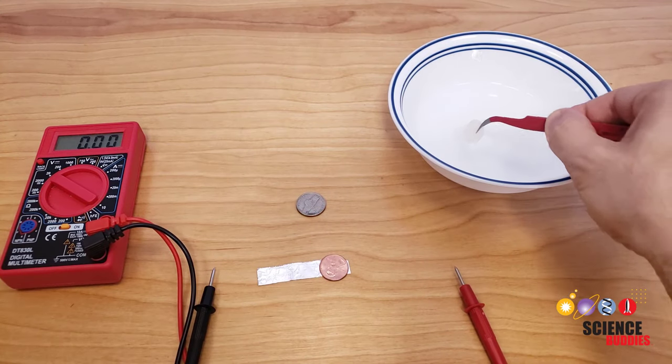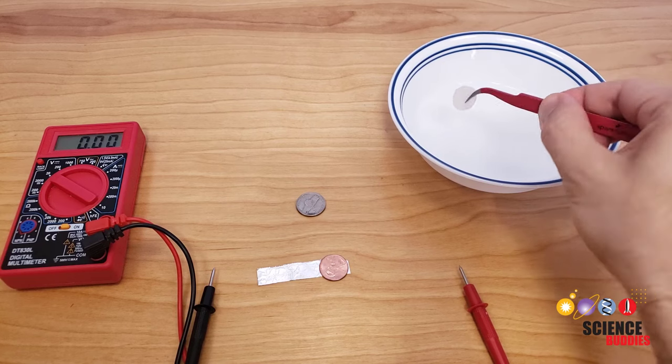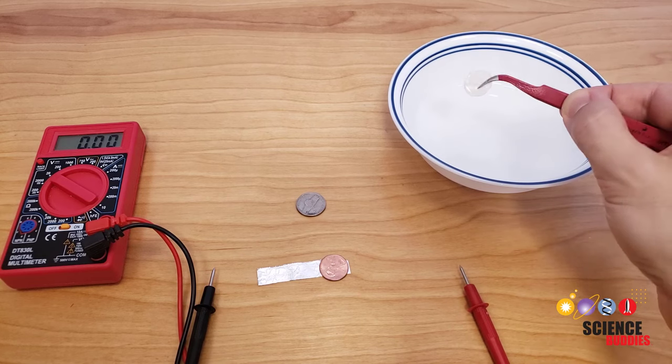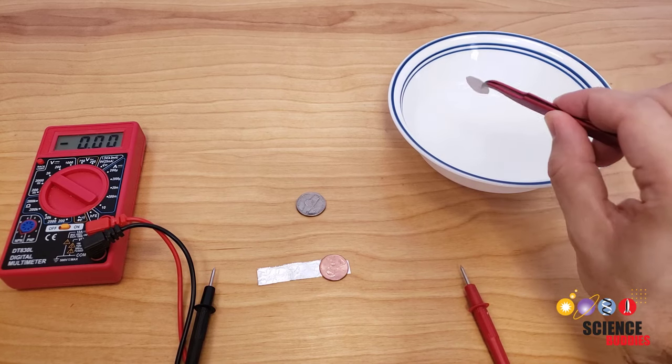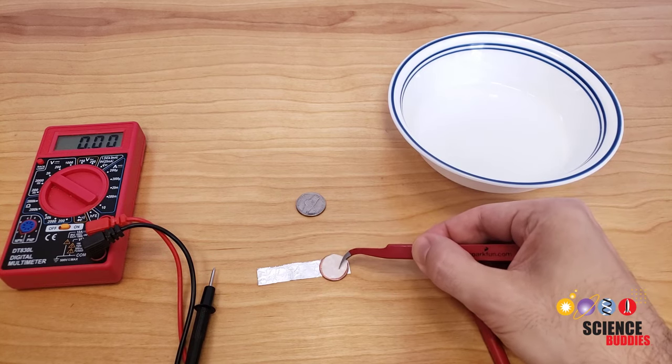Next, take your paper circle and dip it in the salt and vinegar solution. Shake it off slightly to make sure that it doesn't have any big drops of liquid hanging off, but you want to make sure it's pretty soaked. Take the paper circle and place it centered on the penny. Make sure it's not drooping over the edges.